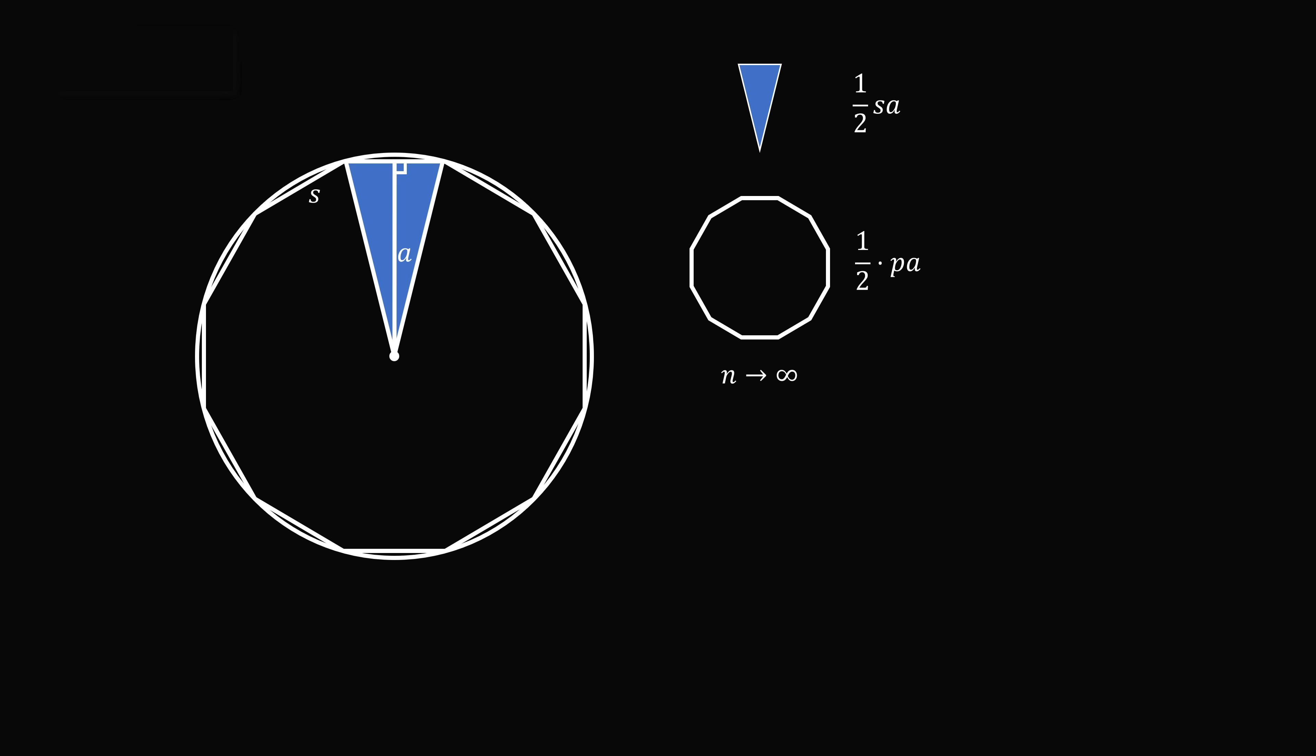Now what happens as n goes to infinity? The perimeter of this polygon will approach the circumference of the circle, and eventually will be equal to the circumference of the circle. But the circumference of the circle, by definition of pi, is equal to 2 pi r.